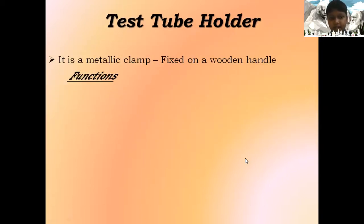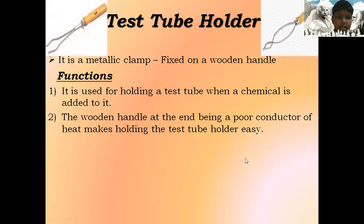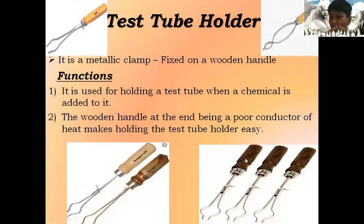Test tube holder: It has a metallic clamp with fixture on a wooden handle. Functions: It is used for holding a test tube when a chemical or substance is added to it. The wooden handle at the end, being a poor conductor of heat, makes holding the test tube holder easy.